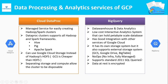Under Analytics Services of GCP, you have Cloud Dataproc and BigQuery. Cloud Dataproc is a managed service used to create Hadoop and Spark clusters in GCP very easily. It supports almost all frameworks of Hadoop and Spark like Hive, Pig, and Apache Spark. You can also integrate Google Cloud Storage for storing Hadoop data instead of HDFS, and Google Cloud Storage is cheaper than HDFS.